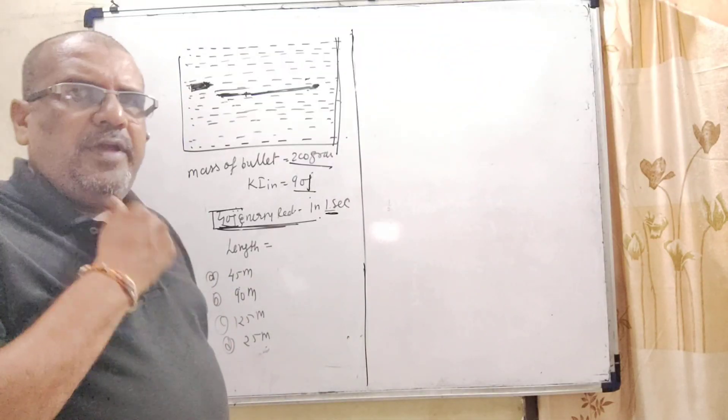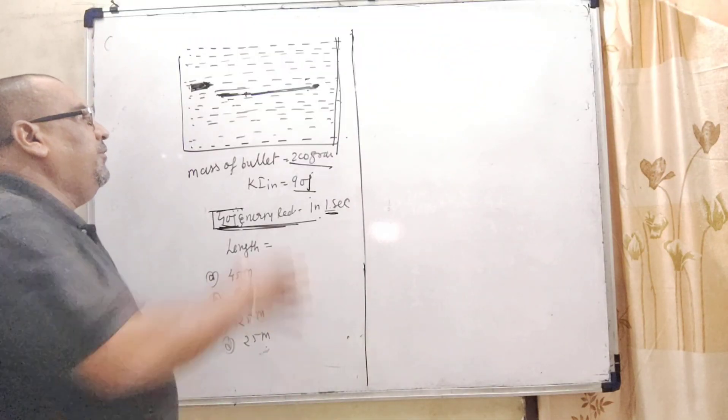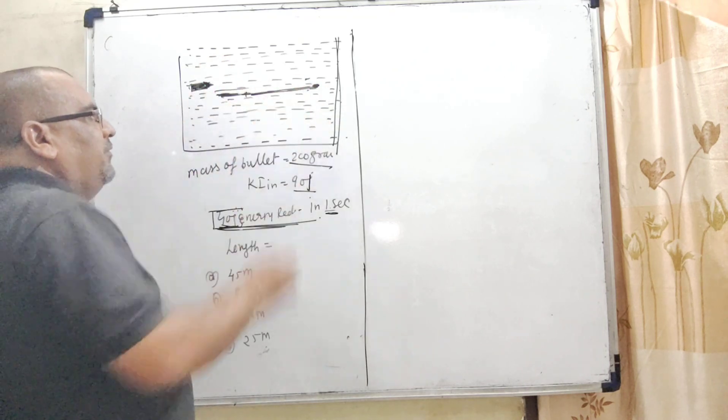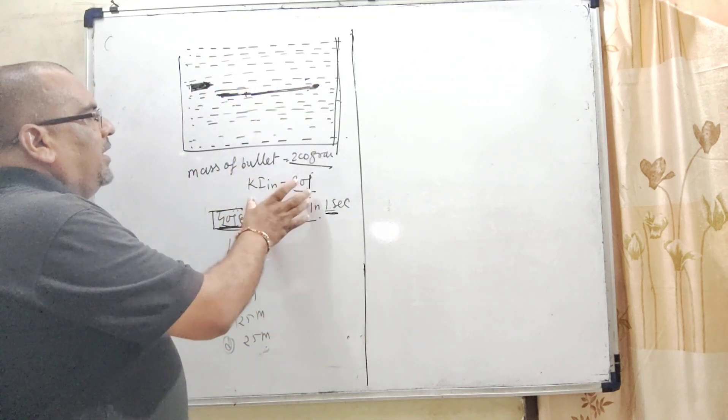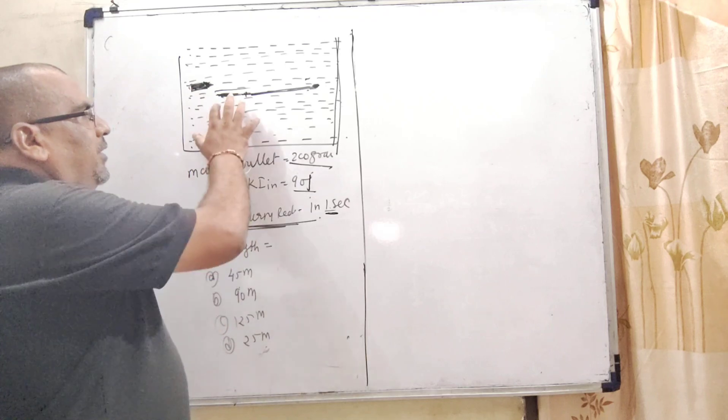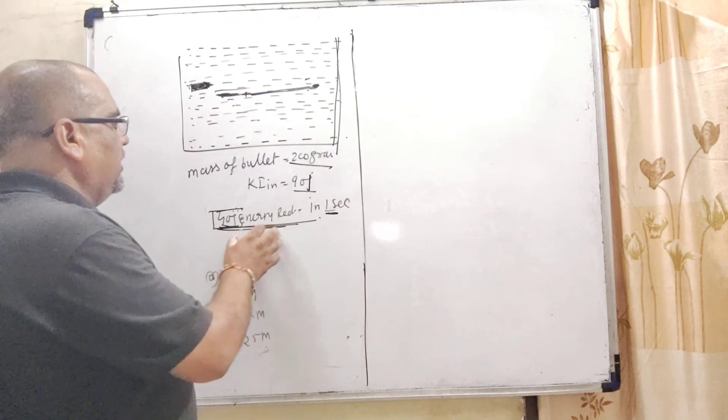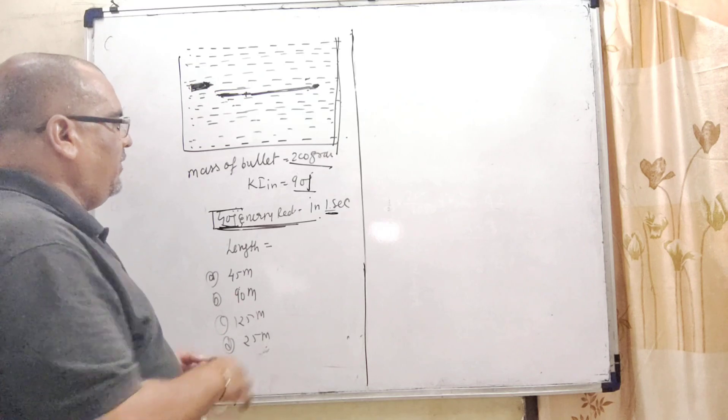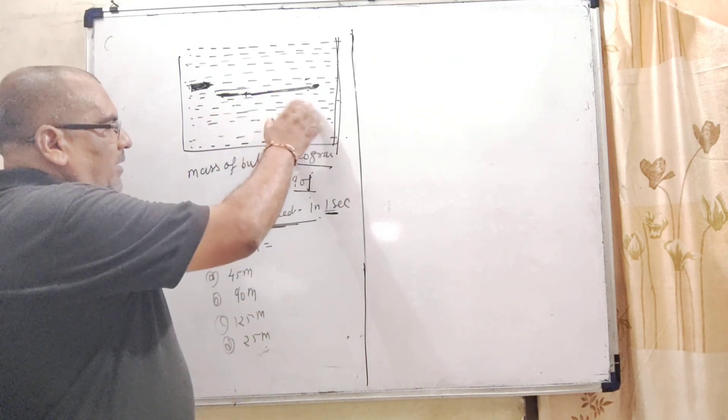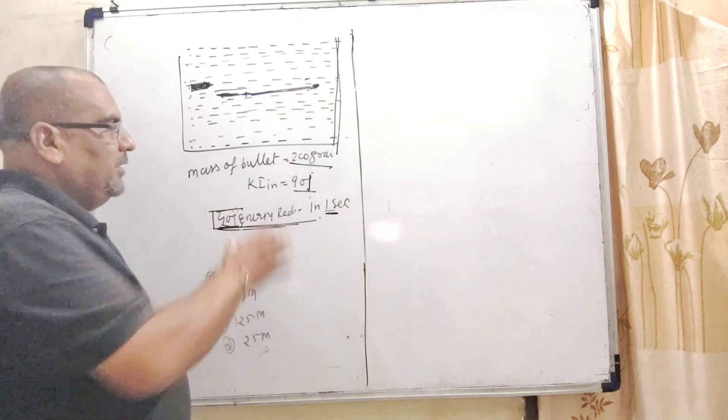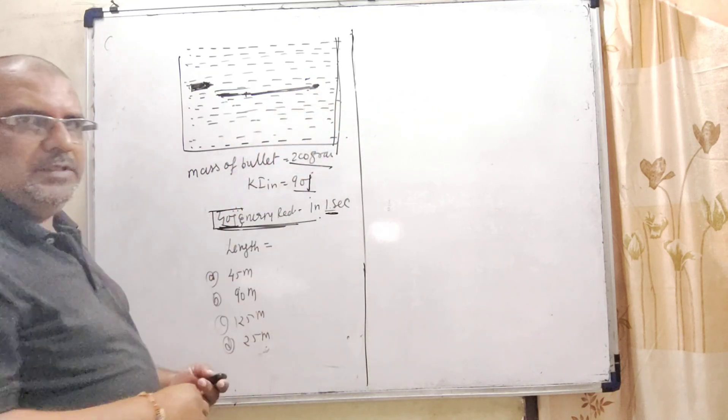Let us first understand what the question says. Here we have a swimming pool and a bullet is fired with energy of 90 Joules. After 1 second, the energy is reduced to 40 Joules. We have to calculate the velocities. And after some time, we have to calculate when the bullet comes to rest, then find out the total length.